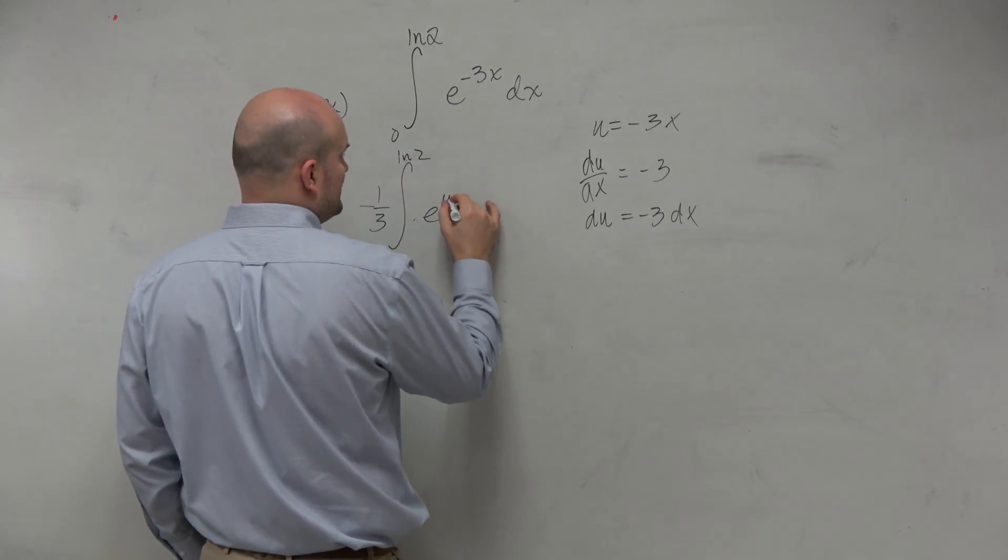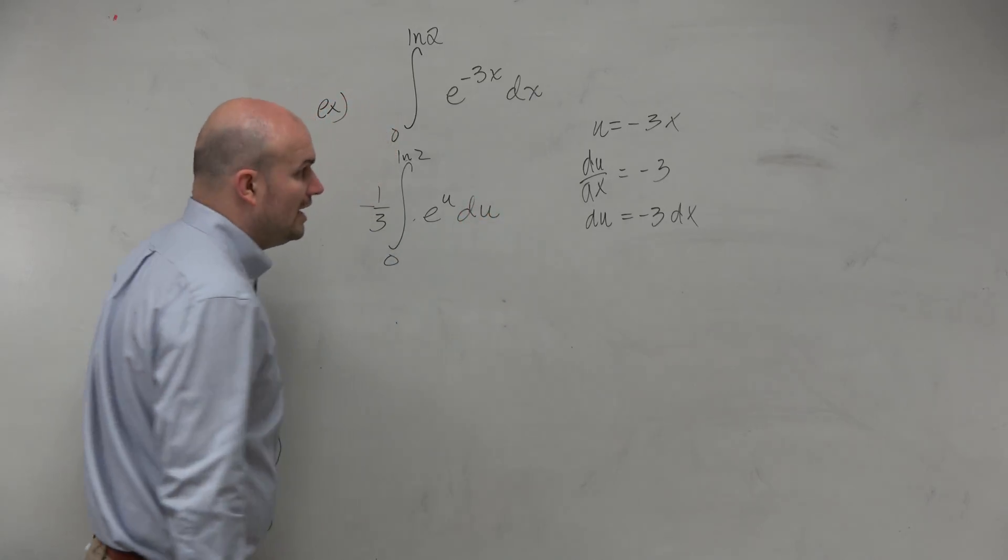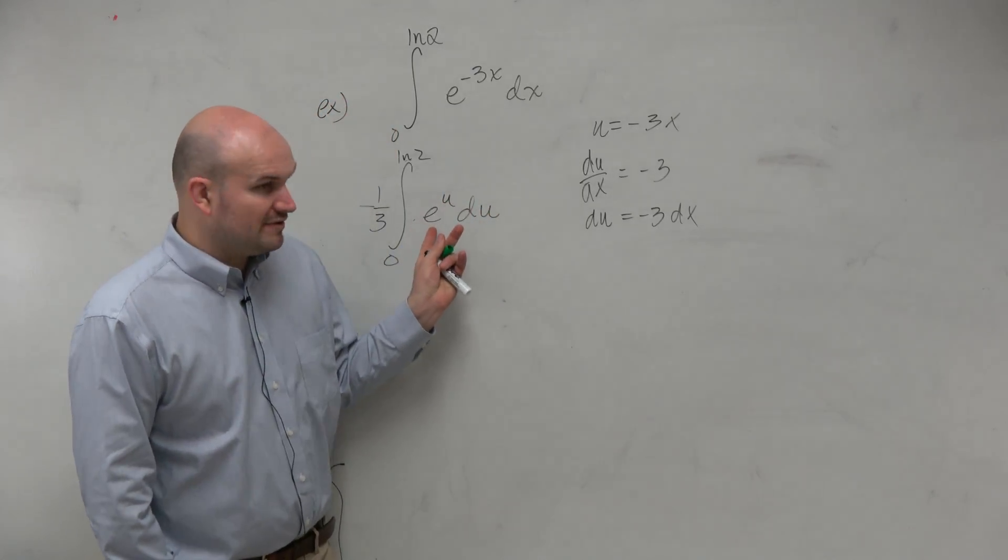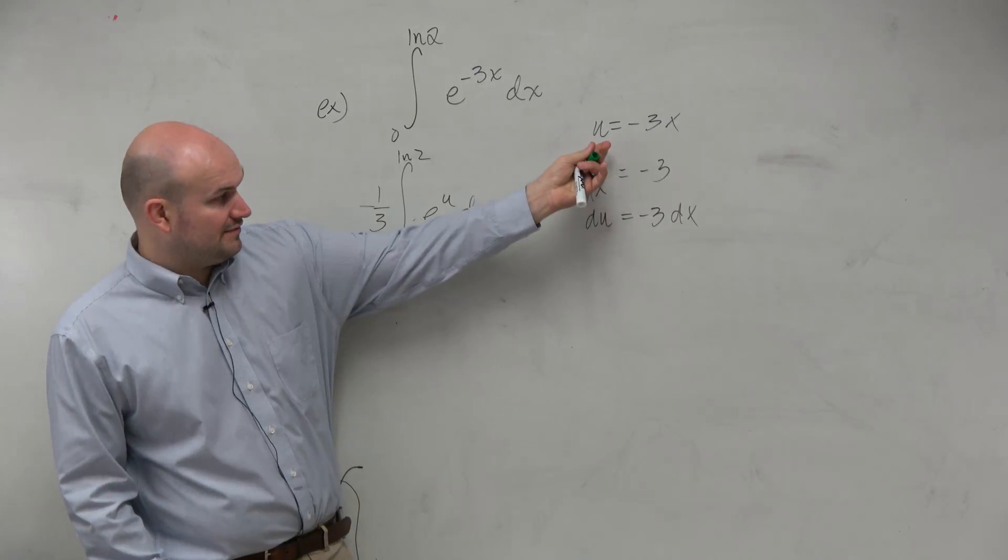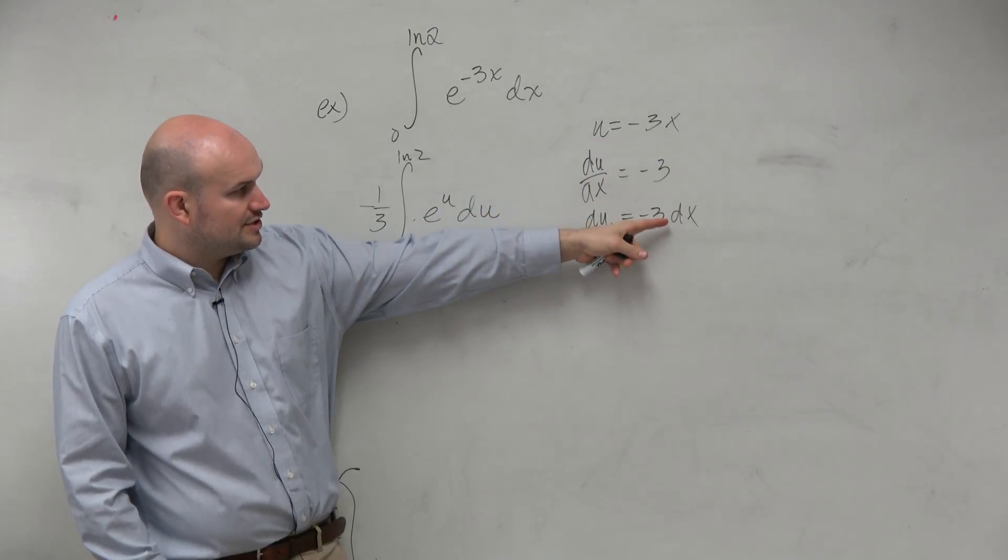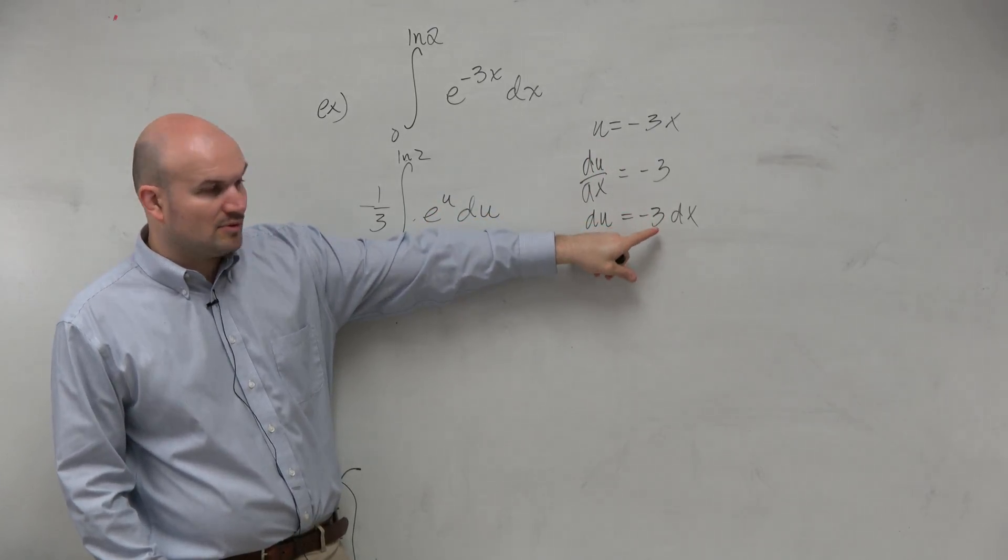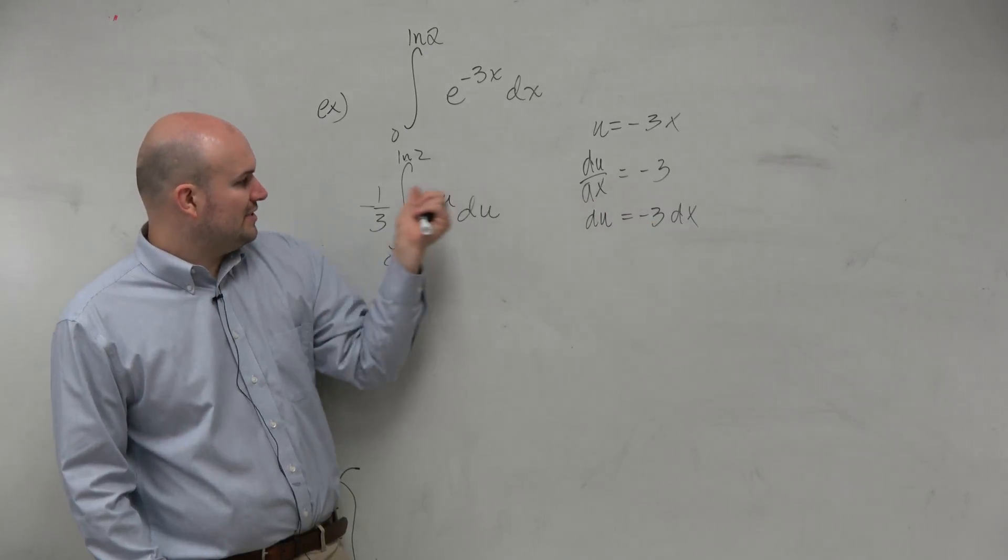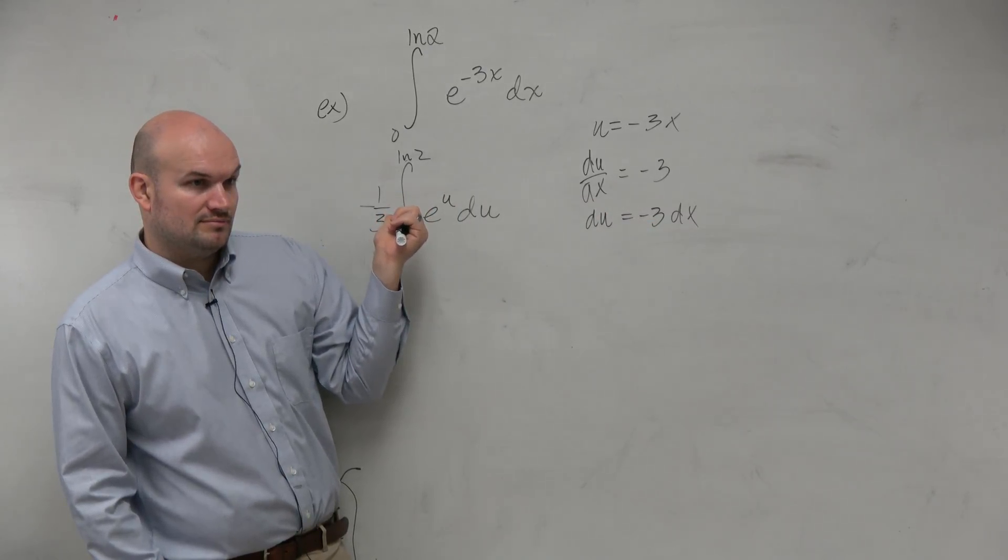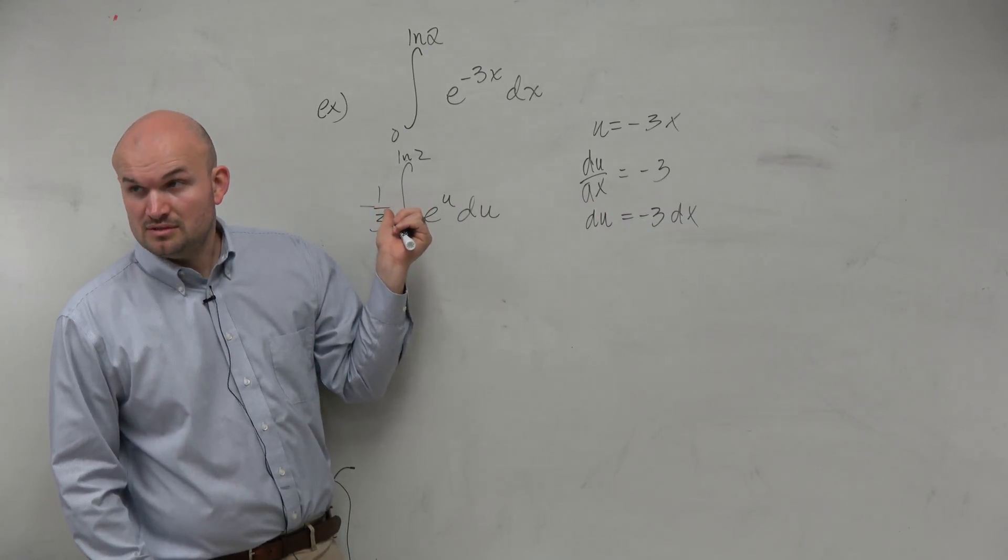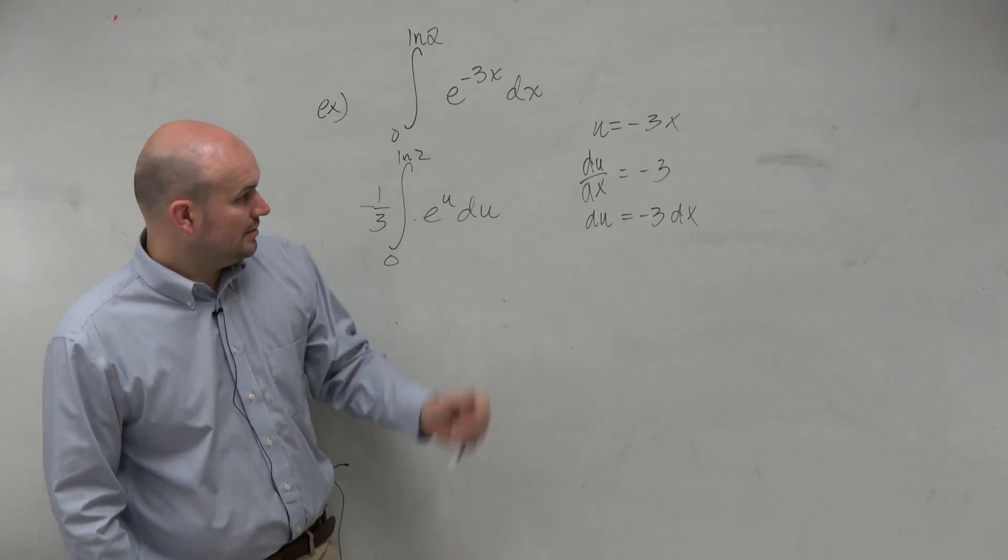And therefore, then I'll have e to the u du. Alright, so let's make sure we have everything covered. We have the function raised to u, where u equals negative 3x. du is equal to negative 3 dx, but we're correcting this negative 3 with the negative 1/3 to make sure we're covered. Look good? Looks good? No, it doesn't look good. OK.